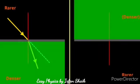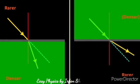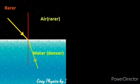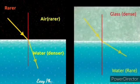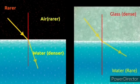When light travels from a rarer medium to a denser medium, it bends towards the normal line. When it travels from a denser medium to a rarer medium, it bends away from the normal. For example, light traveling from air to water bends towards the normal. When a light ray travels from glass to water, that is denser to rarer, it bends away from the normal line.